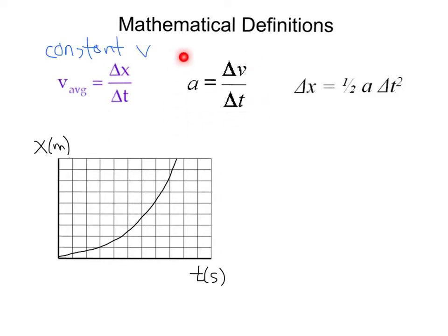Here's our definition of acceleration, which is any change in velocity divided by time. You notice we have a new equation here. The distance we travel as we accelerate would be equal to one-half acceleration times time squared.